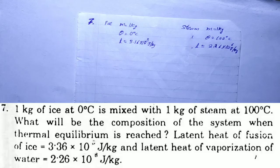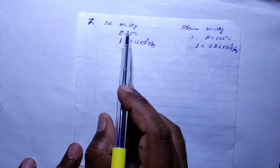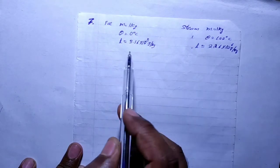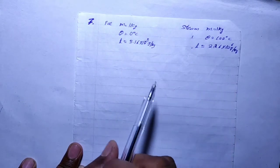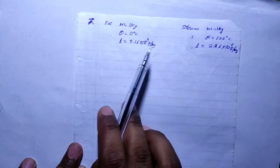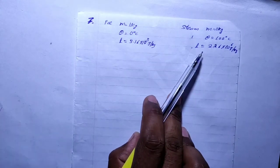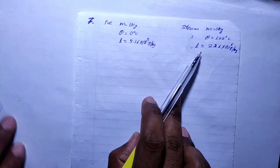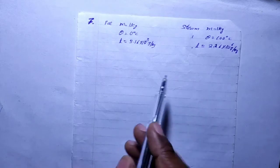Steam and ice are the same mass — 1 kg each. If we mix them together, the composition could be steam, ice, or water. We will now solve the problem to find the final composition.